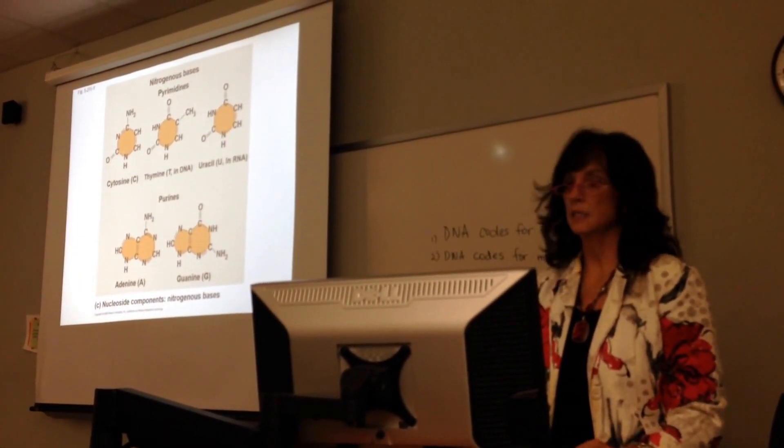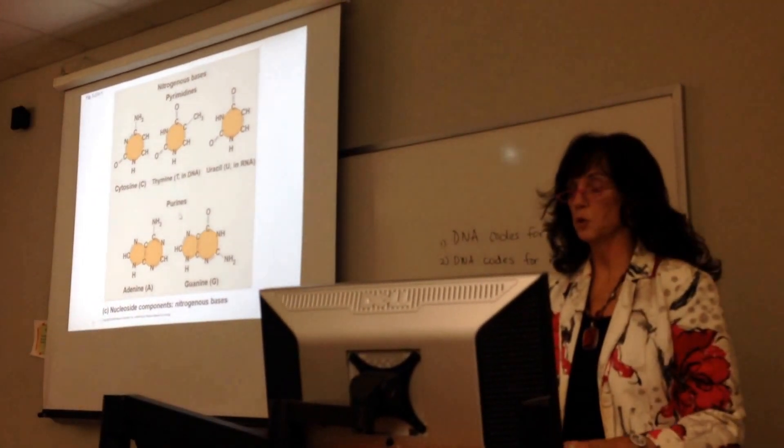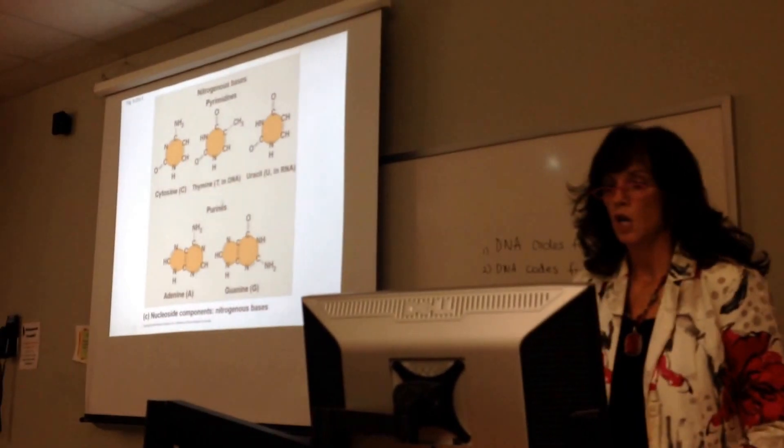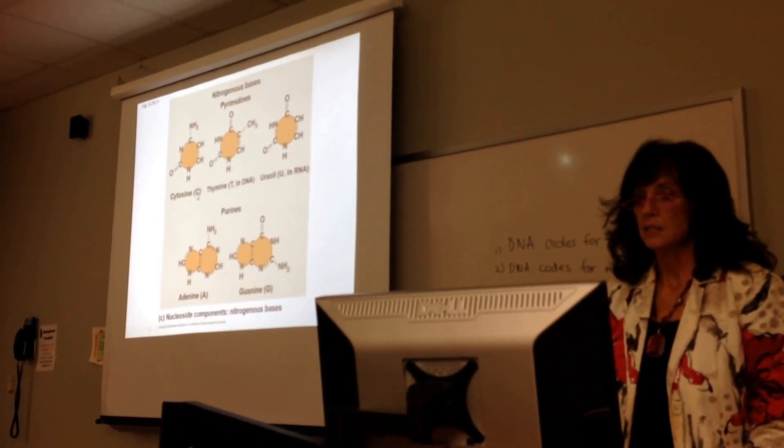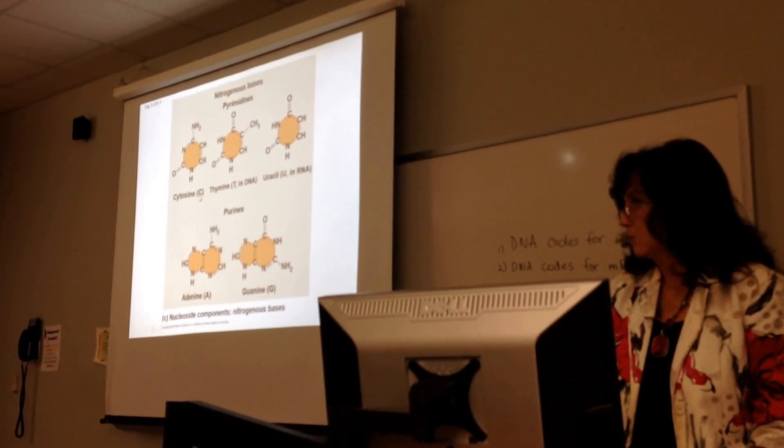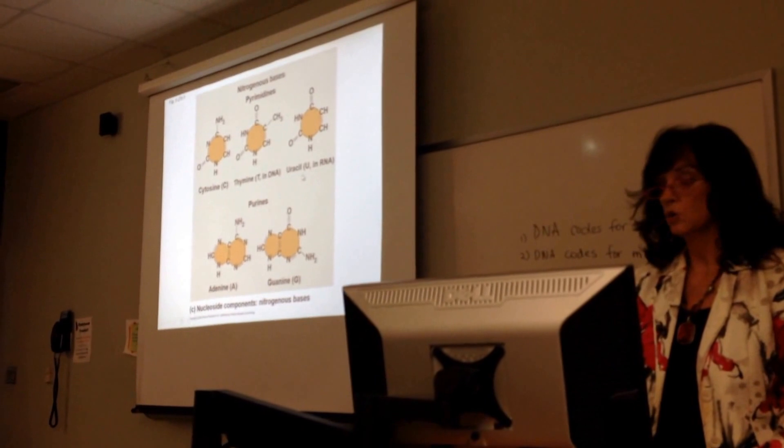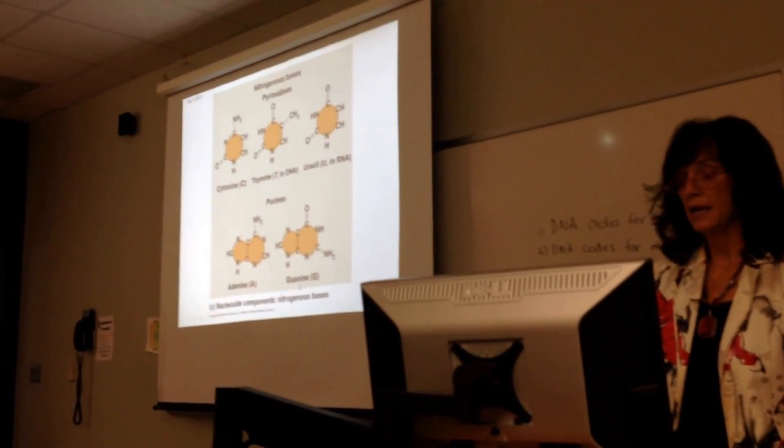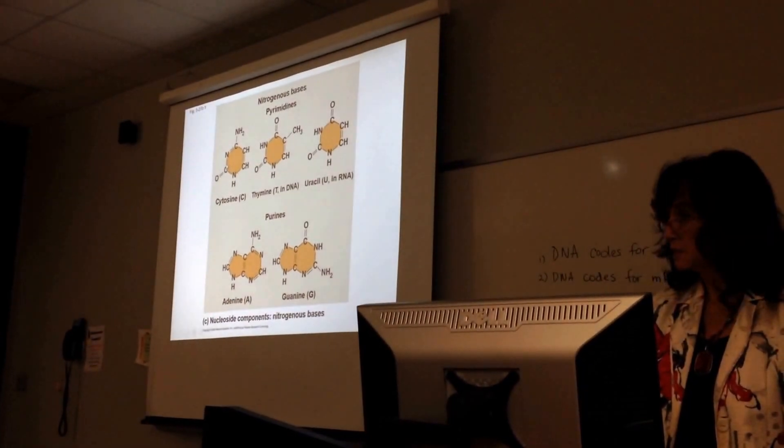Now your bases, you have two different types, either pyrimidines or purines, but you don't have to know that for this chapter. You just need to know that it has nitrogenous bases. And the bases are, we call them, for cytosine we just always put C. For thymine, we put T, uracil U, adenine A, and guanine G. You notice that these are bigger than the pyrimidines.